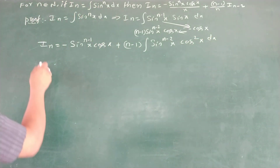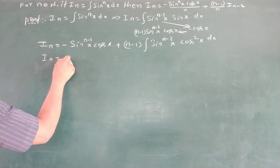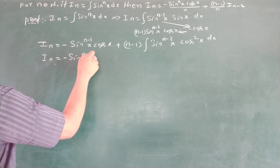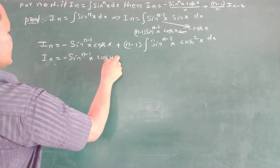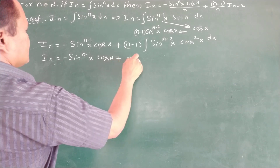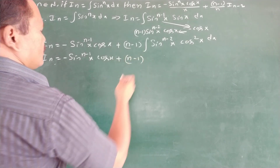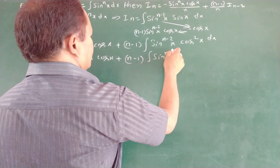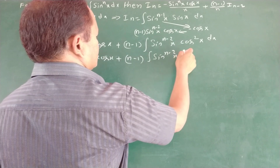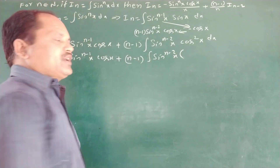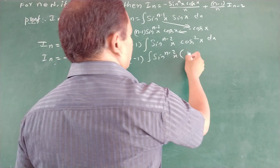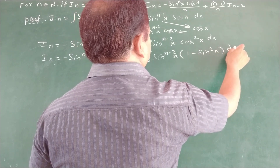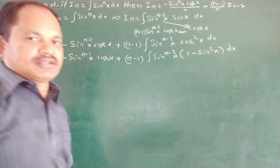Now Iₙ equals minus sinⁿ⁻¹x times cos x plus (n minus 1) times the integral of sinⁿ⁻²x times cos²x. We substitute cos²x equals 1 minus sin²x, giving sinⁿ⁻²x times (1 minus sin²x).